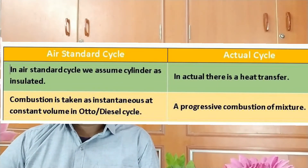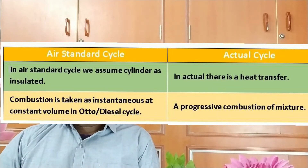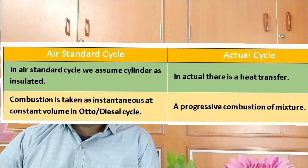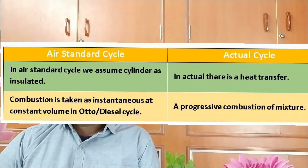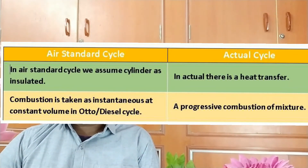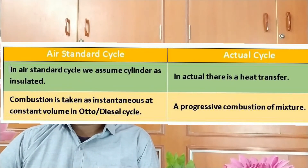Another key difference: in a standard cycle, combustion is taken as instantaneous — at constant volume in the Otto cycle or at constant pressure in the diesel cycle. But in an actual cycle, combustion is a progressive combustion of the mixture, which is a very important distinction.